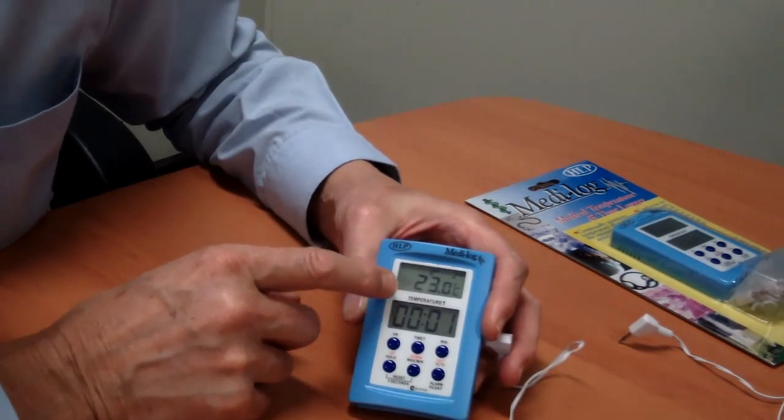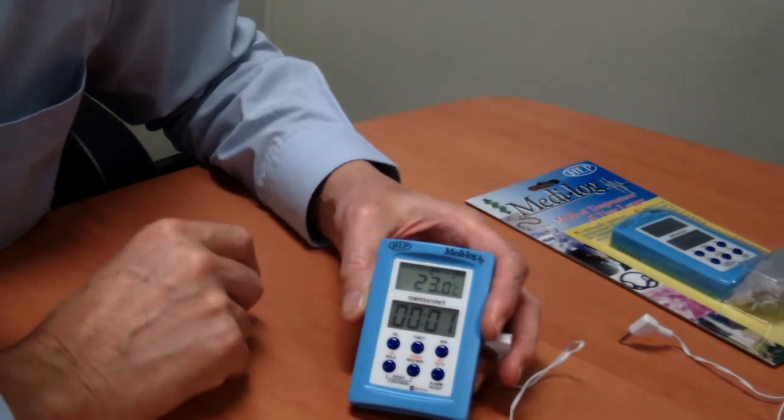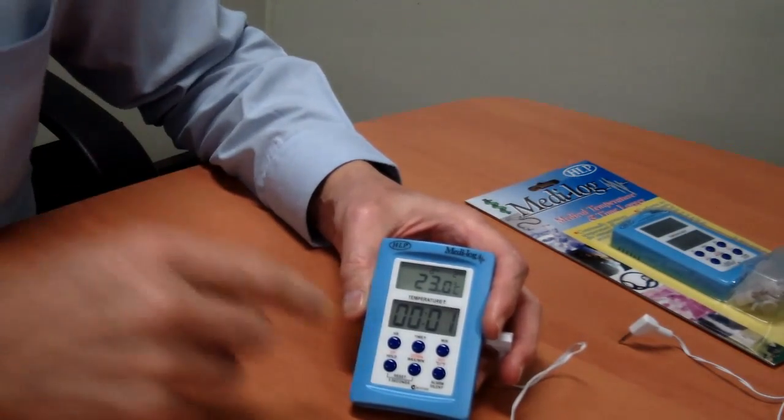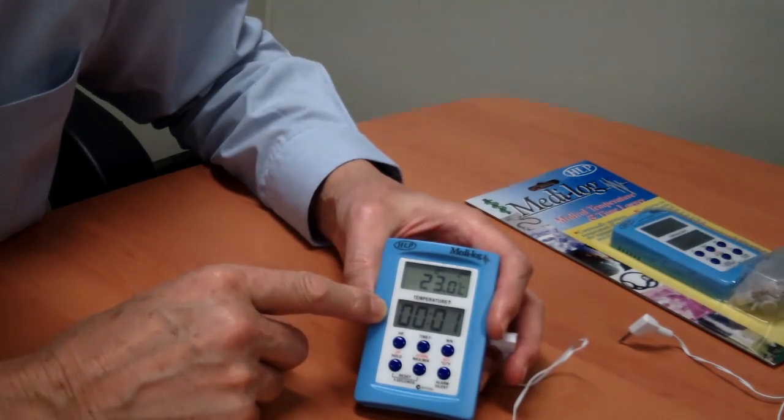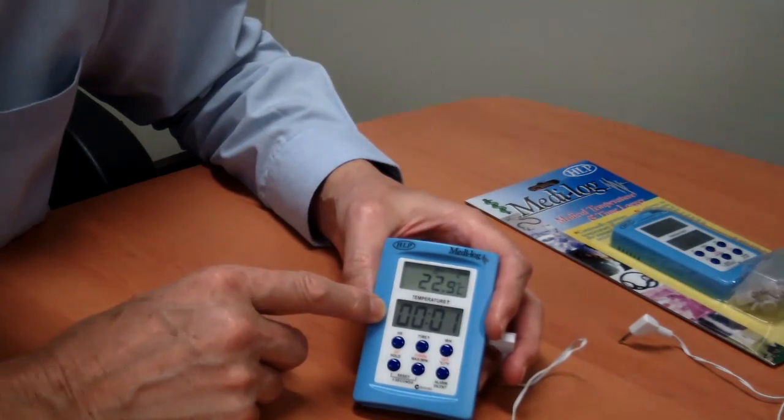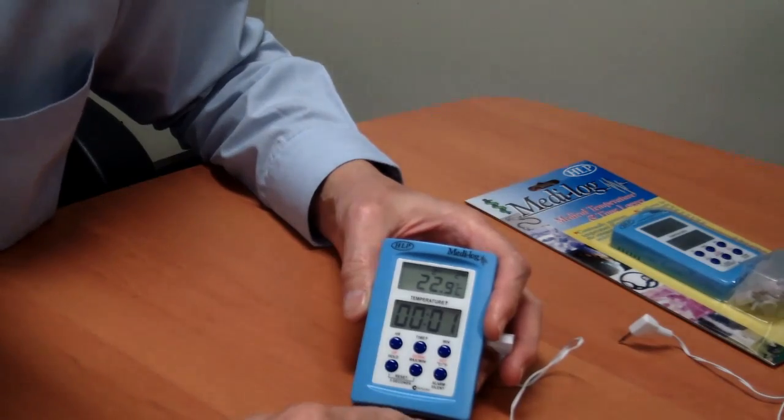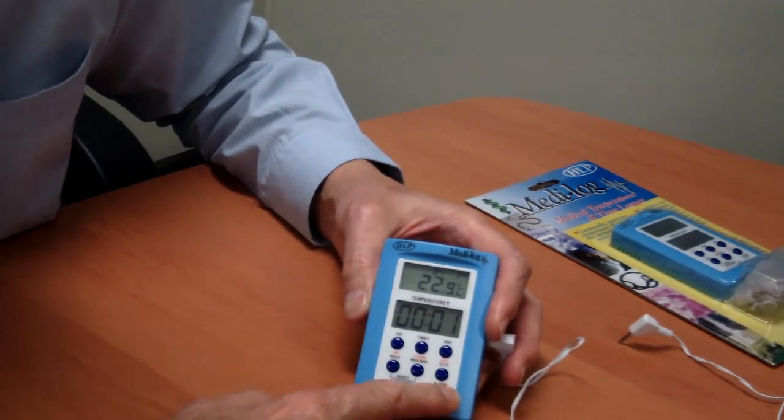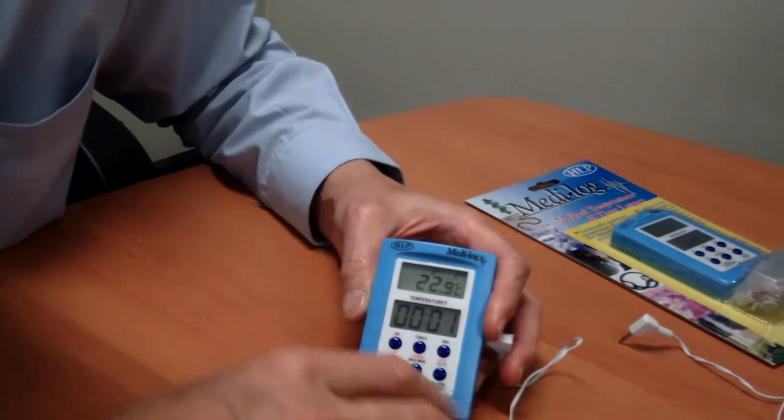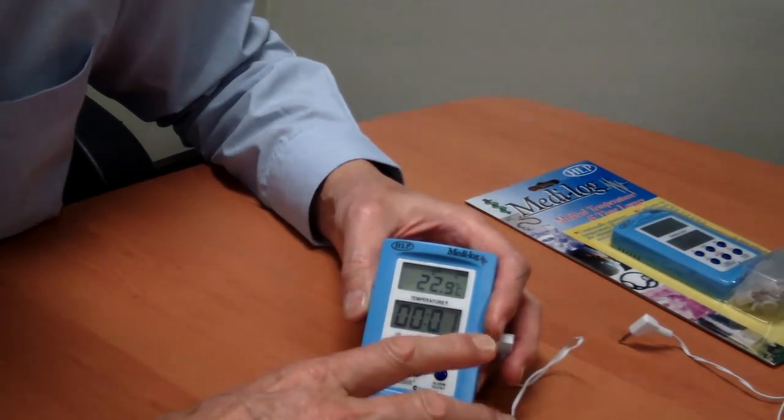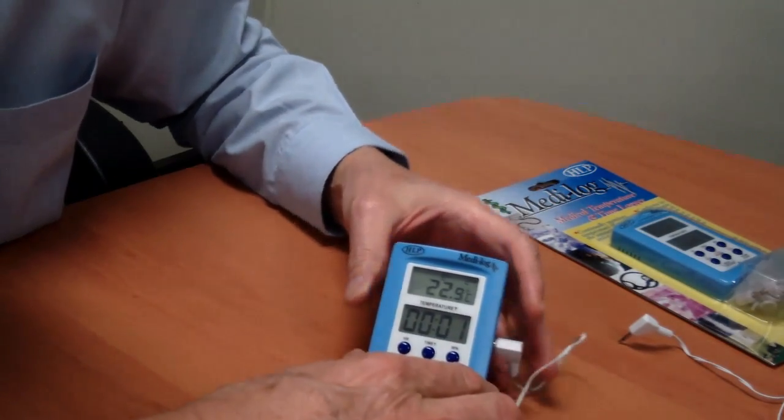The bottom display is going to show me how long the unit is out of temperature. So if the unit is out of temperature for one hour and 20 minutes, the bottom display will show 120. Now that will keep beeping like that for as long until somebody comes and resets it.